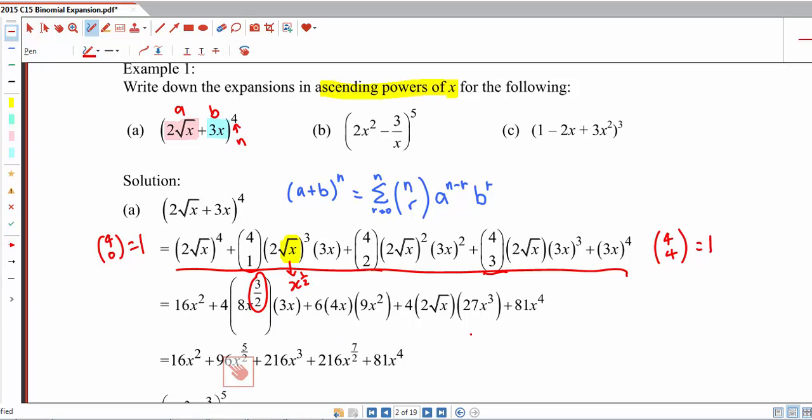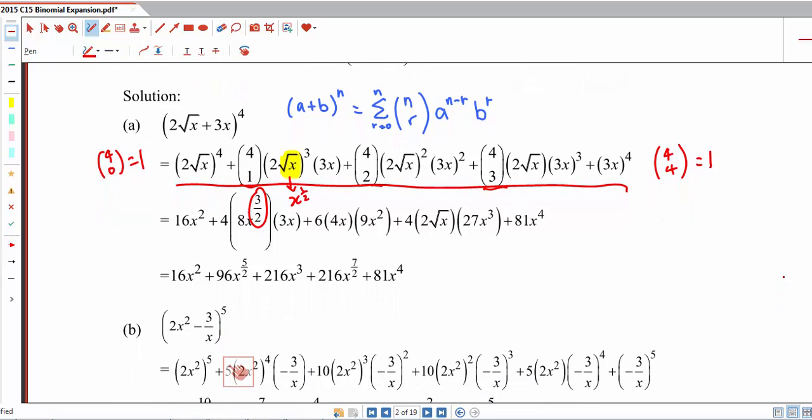And we like to simplify things. So combining all the x terms together, we can write this out neatly. And the binomial expansion will be in ascending powers of x. Now let's look at part b.